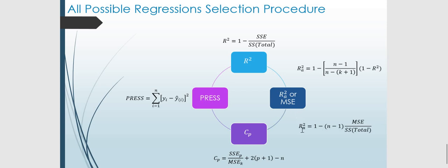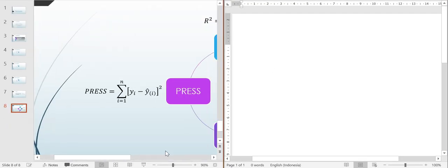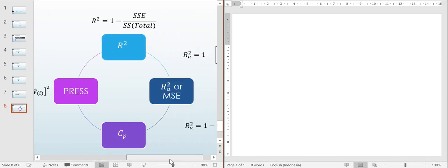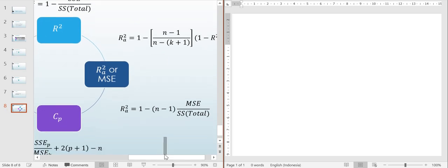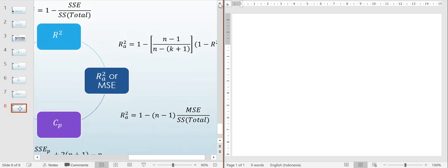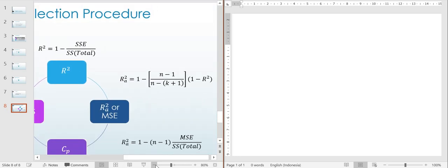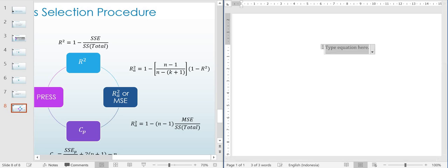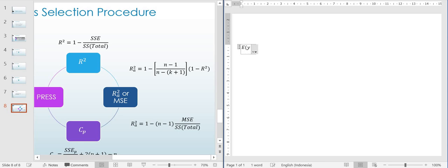So what is actually R-squared? It is given by 1 minus the sum squared error divided by sum squared total. Just to remind you, if we have the multiple regression model, the sum squared error is the key quantity here.